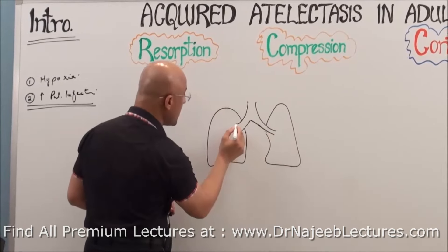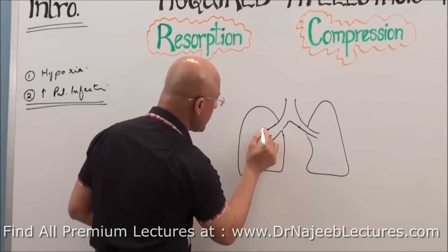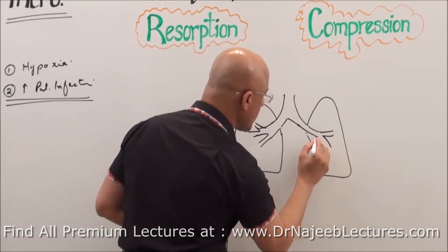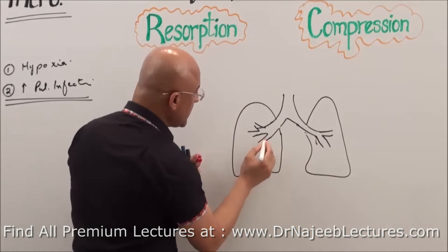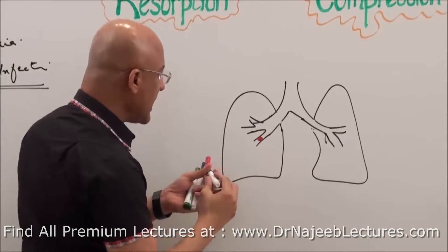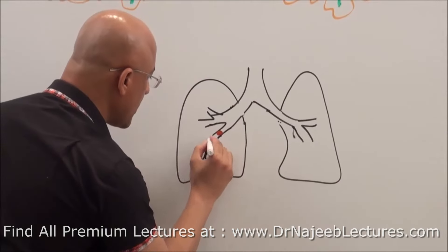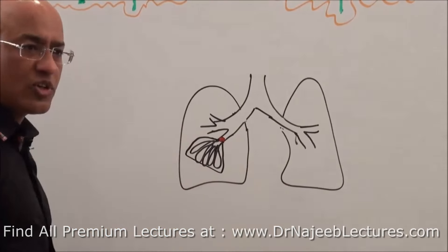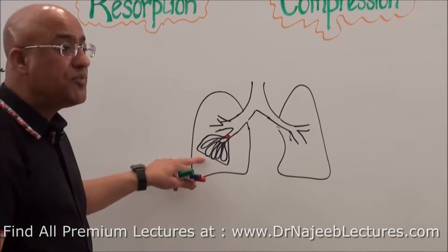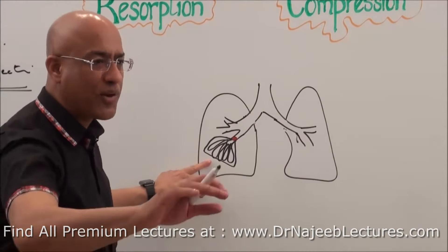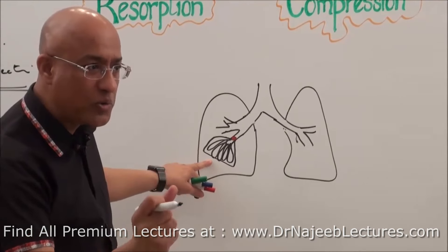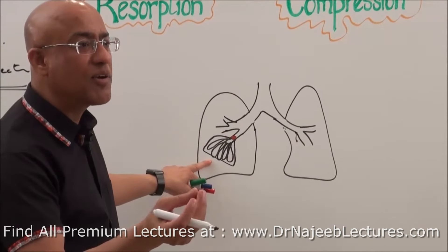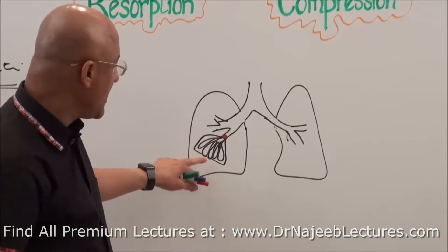It's a very simple diagram. Let's suppose here there was complete obstruction, which led to collapse of this area. So this is atelectasis. It is like previously inflated balloons that are deflated. These are deflated balloons, or in neonatal atelectasis, we can say the balloons never got inflated properly.